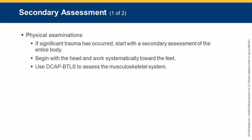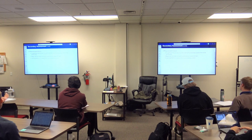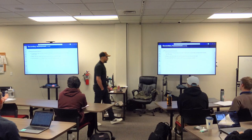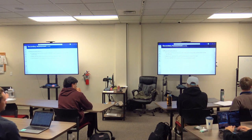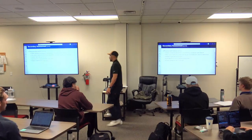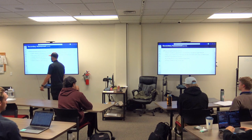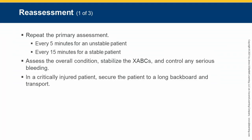In the secondary assessment, do a systematic head-to-toe or a rapid focused assessment using DCAP-BTLS. If you're worried you're missing something, start at the head and work down. Unconscious patients get fully exposed — 'trauma naked.' If it's just a broken arm, focus on that arm. You can always splint in the back of the ambulance — if blood pressure is dropping, move them first. Reassess every 5 minutes for unstable, 15 for stable.